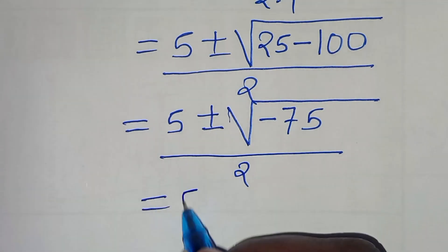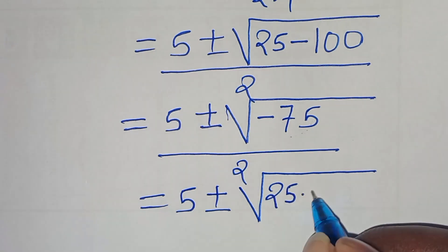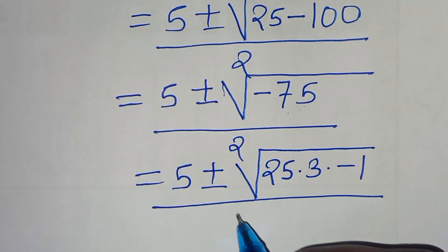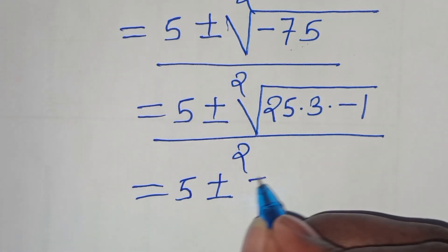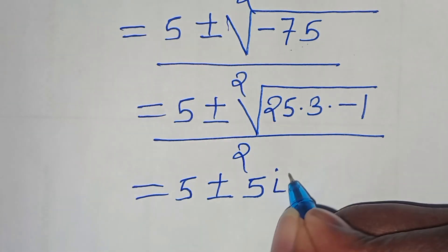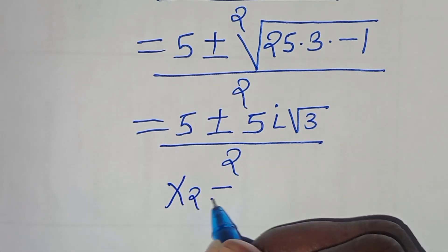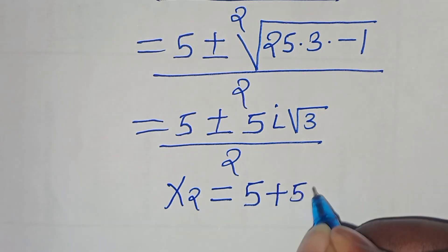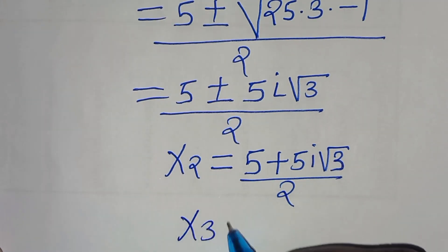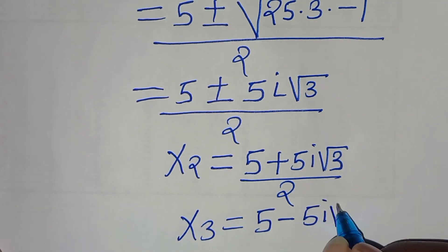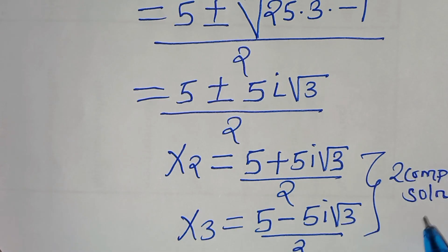So we have x₂ = (5 + 5i√3) / 2 and x₃ = (5 − 5i√3) / 2. These are two complex solutions from case 1.